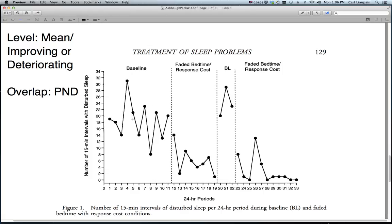In this case, the mean from reading the results section — and I could calculate it myself, but I'm going to believe them — for the baseline here is 18. Generally, that's how level is described in any individual phase. If you're talking about a single phase, you report the mean and the range of the data.